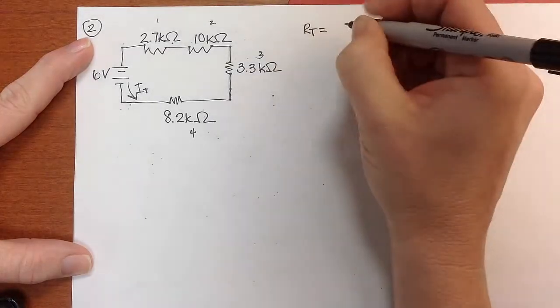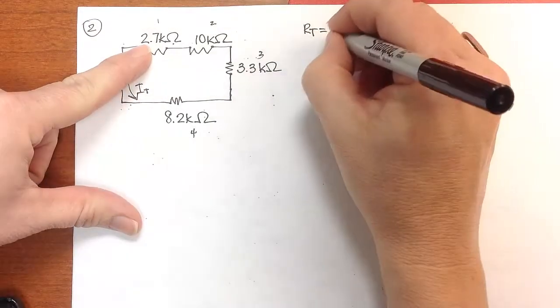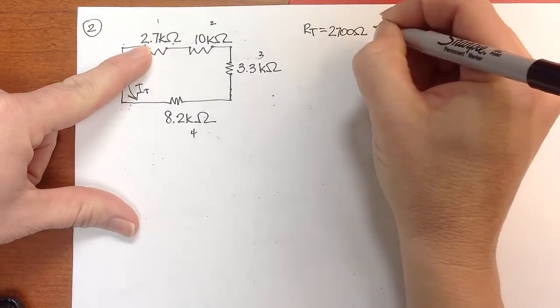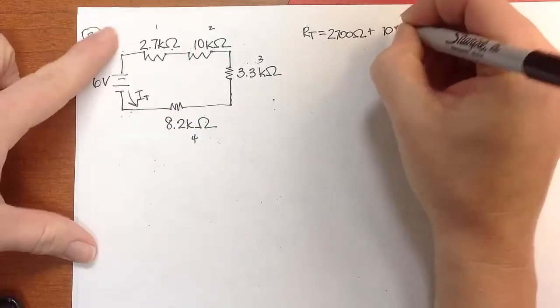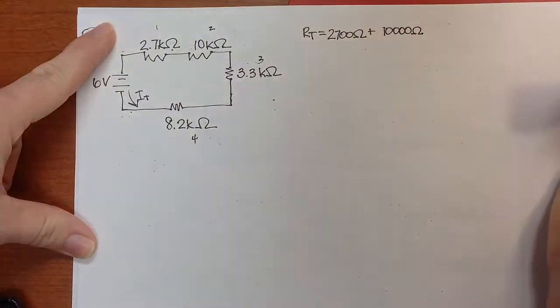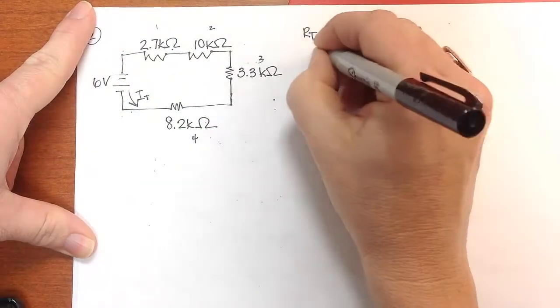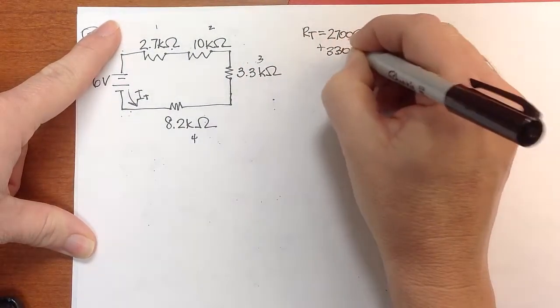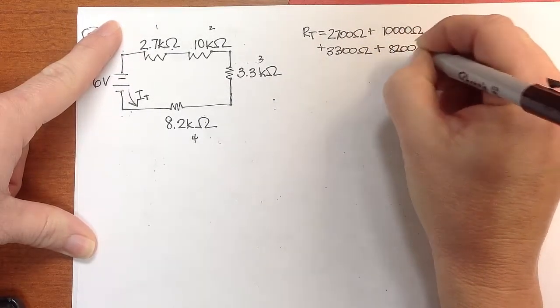The total R is going to be equal to, 2.7 kiloohms is 2,700 ohms, plus 10 kiloohms would be 10,000 ohms, plus 3.3 kiloohms, 3,300 ohms, plus 8,200 ohms.